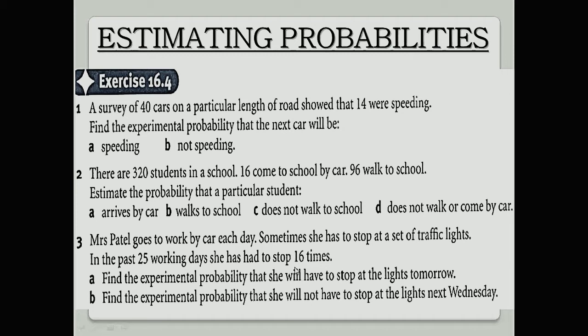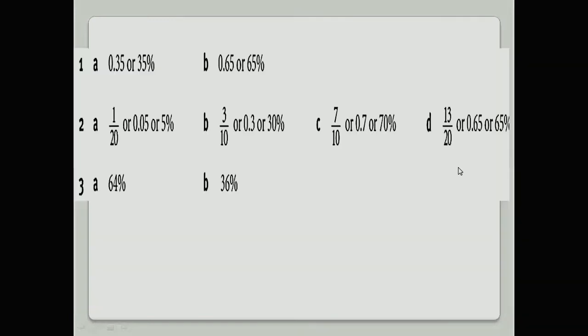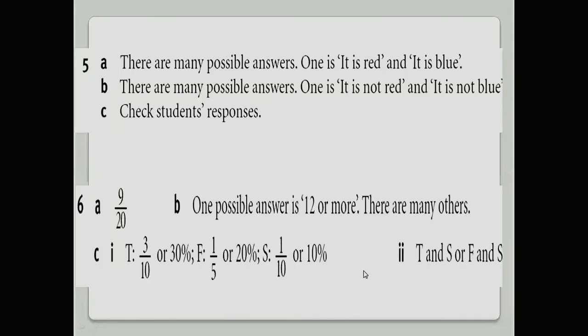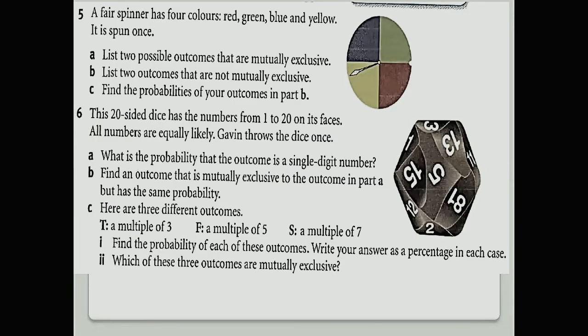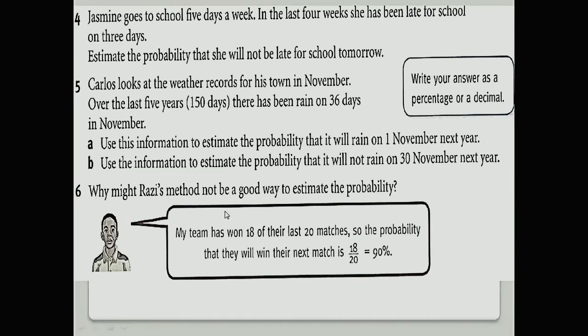Out of 25 days, 16 times she stopped her car, so what is the probability? 16 out of 25, so the probability should be 64 percent. Let's check here, that is 64 percent. The experimental probability that she will not have to stop is 100 minus 64, so you will get your answer, 0.36.